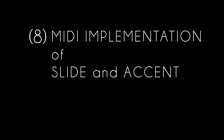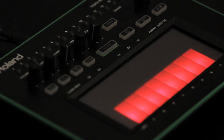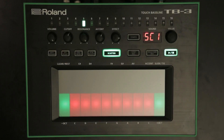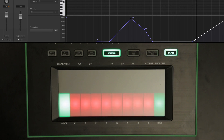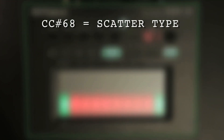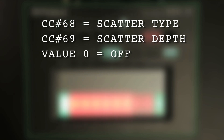Function 8: MIDI Implementation of Slide and Accent by Control Change. You can now alternatively control slide and accent via control change messages — CC 102 is slide and CC 103 is accent. Function 9: Scatter Controllable via MIDI. You can now control the scatter switch, type, and depth via MIDI. This function requires the internal clock to be running. When the controller value is 0, the scatter is off.